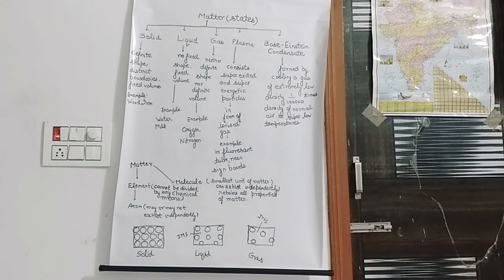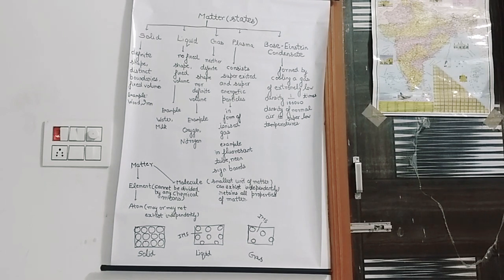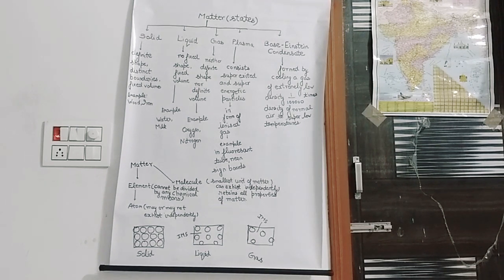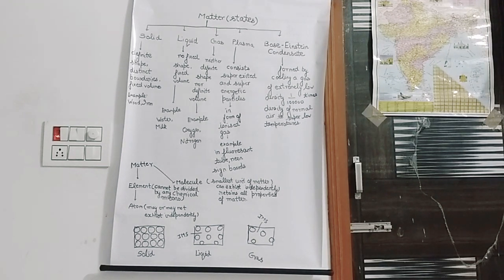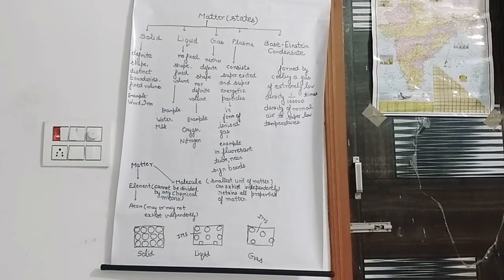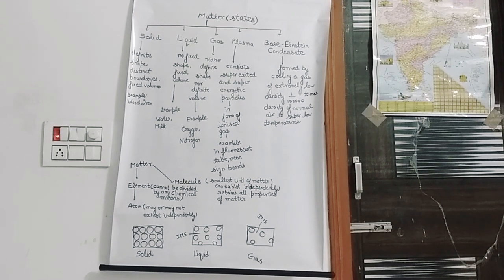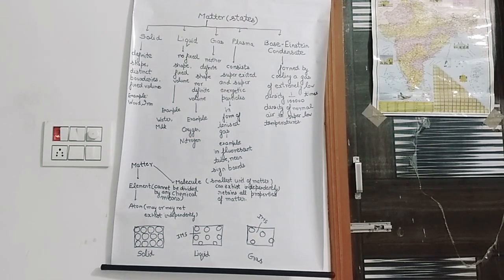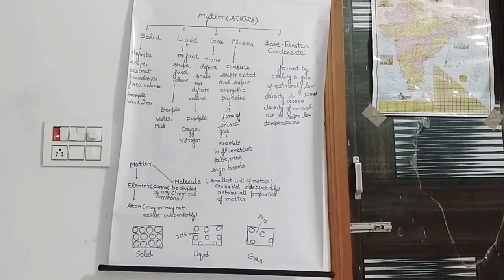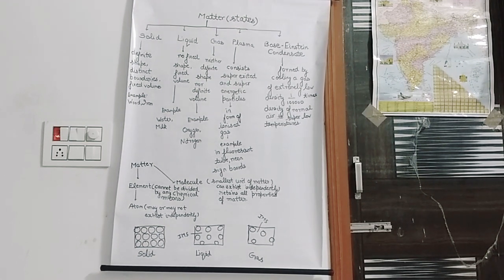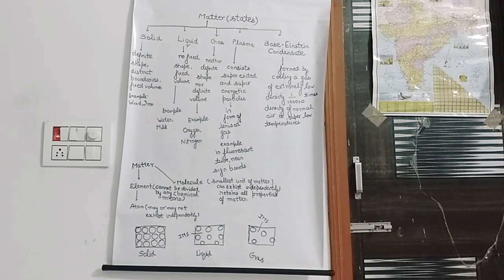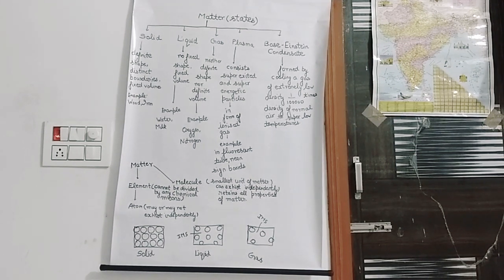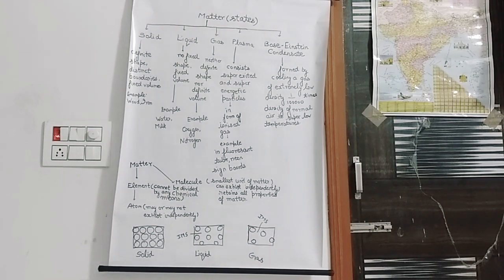Matter is anything that occupies space and has weight. An element is a sub-unit of matter — matter is made up of elements only. Elements are those sub-units of matter which cannot be divided by any chemical means. For example, iron is an element — basically only one type of atom is present in an element.